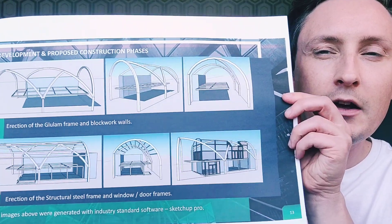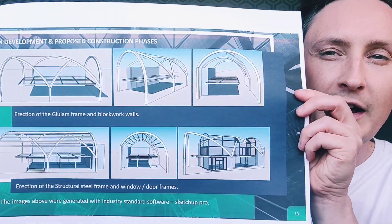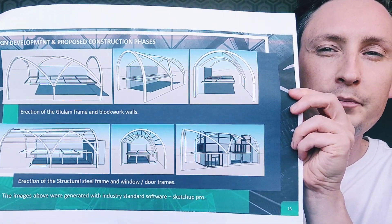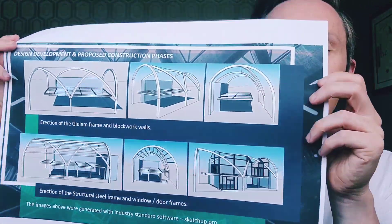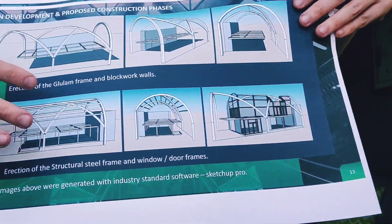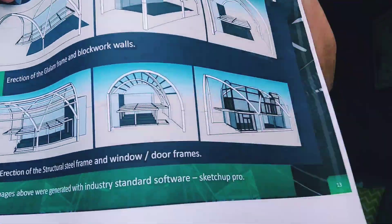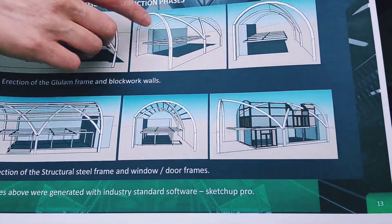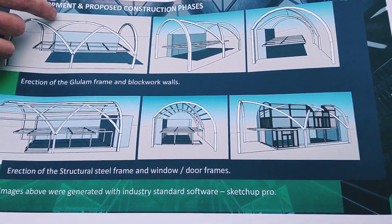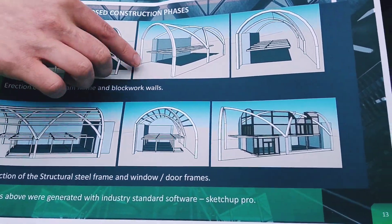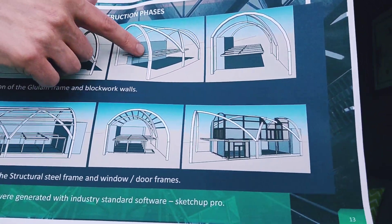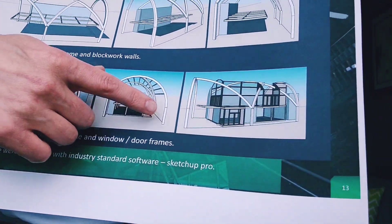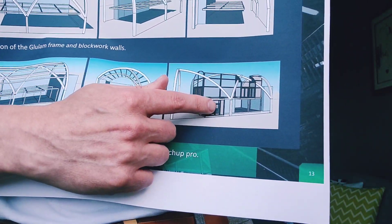After producing my drawings on AutoCAD, I then moved on to using 3D model software so that I could elementally build the structure. These images here show how I built the model on the computer in stages. First of all I inserted the glulam frame, then I started inserting blockwork, floors and steel frame, and eventually windows and doors.